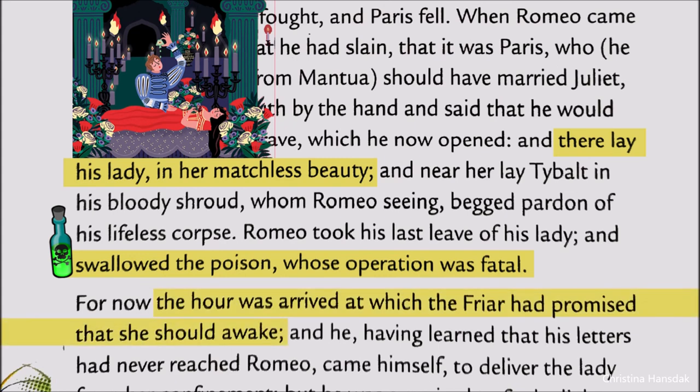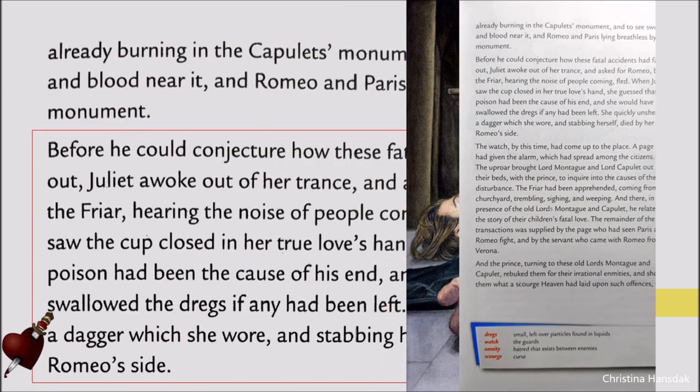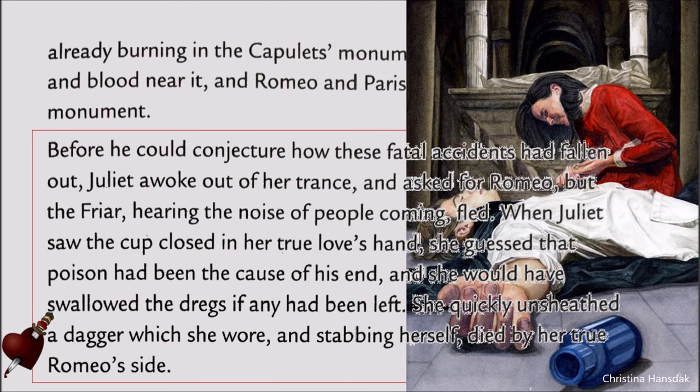Now the time arrived at which Juliet should awake. Juliet awoke and asked for Romeo, but the Friar fled because he heard the noise of people coming. Juliet saw the cup closed in her true love's hand and guessed that poison had been the cause of his end. For whom would she now live? So she pulled out her naked dagger and stabbed herself dead by Romeo's side.